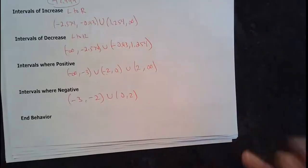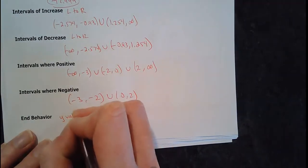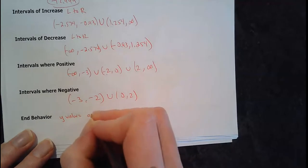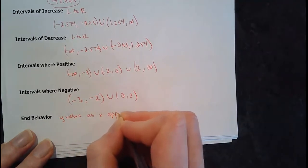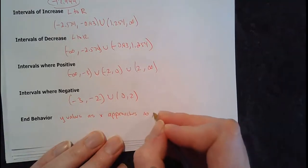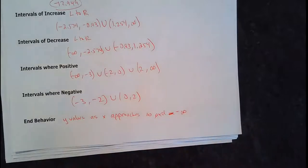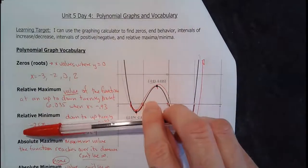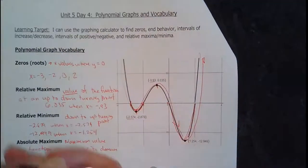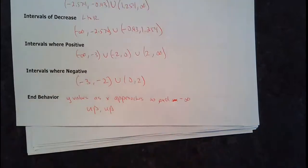End behavior is describing what the y-values are doing as x approaches positive infinity — going to the right — and as x approaches negative infinity — going to the left. On this graph, as I go to the left my y-values are going up, and as I go to the right my y-values are also going up. So for this one: up and up.